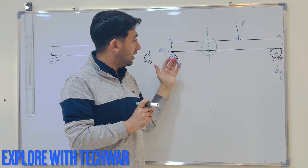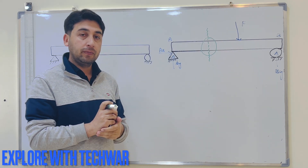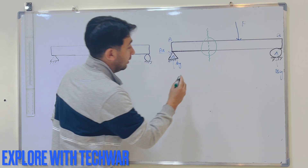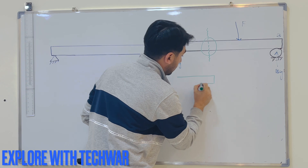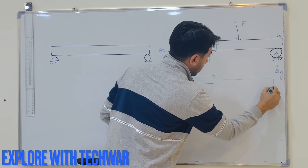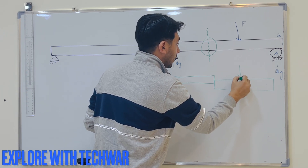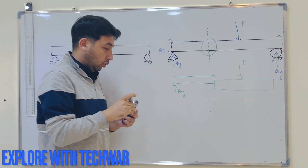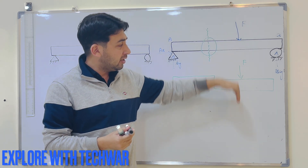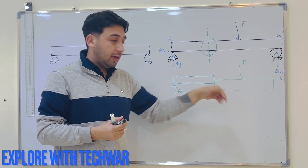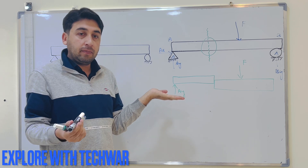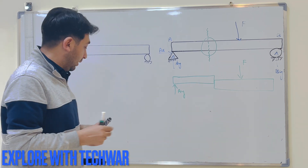If we clearly look at this section, the two forces mainly concerned are AY acting upward and F acting downward. The effect of these two forces on the section should be like this: this force is trying to move this part of the beam downward and this force is trying to move this part upward.